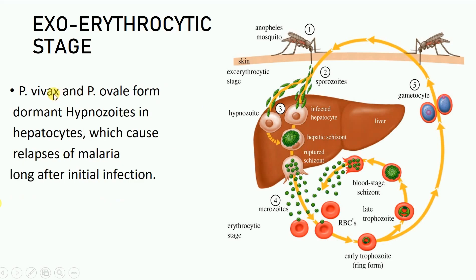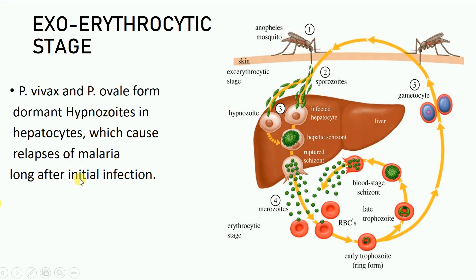In Plasmodium vivax and Plasmodium ovale, however, the sporozoites after infecting the hepatocytes do not instantaneously undergo asexual reproduction. Instead, they enter into a dormant or inactive state called hypnozoites, which remain inactive and do not undergo asexual reproduction for long periods of time. Thus, in these individuals, the symptoms of malaria can appear even after months and years of initial infection, and there can be a relapse in the malarial infection long after the initial infection.